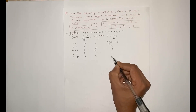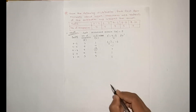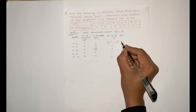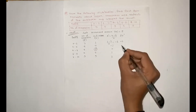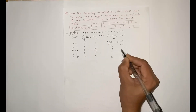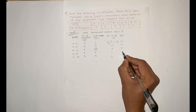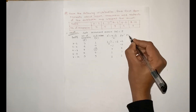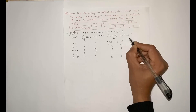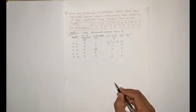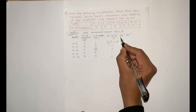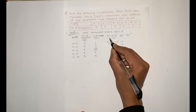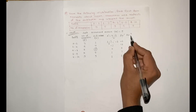Now we calculate f·d-dash: 3 × (−2) = −6; 5 × (−1) = −5; 0; 5 × 1 = 5; 3 × 2 = 6. Then for f·d-dash squared, we multiply f·d-dash by d-dash again to get the squared column.